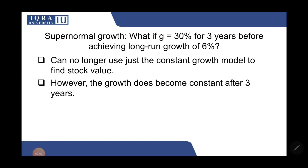In this video we will be covering a question that has supernormal growth. What if the growth rate is 30% for three years before achieving the long-run growth rate? Our D0 is still 2, our R is still 13%. This is in continuation to the first example, but now we assume the growth rate is 30% for three years.